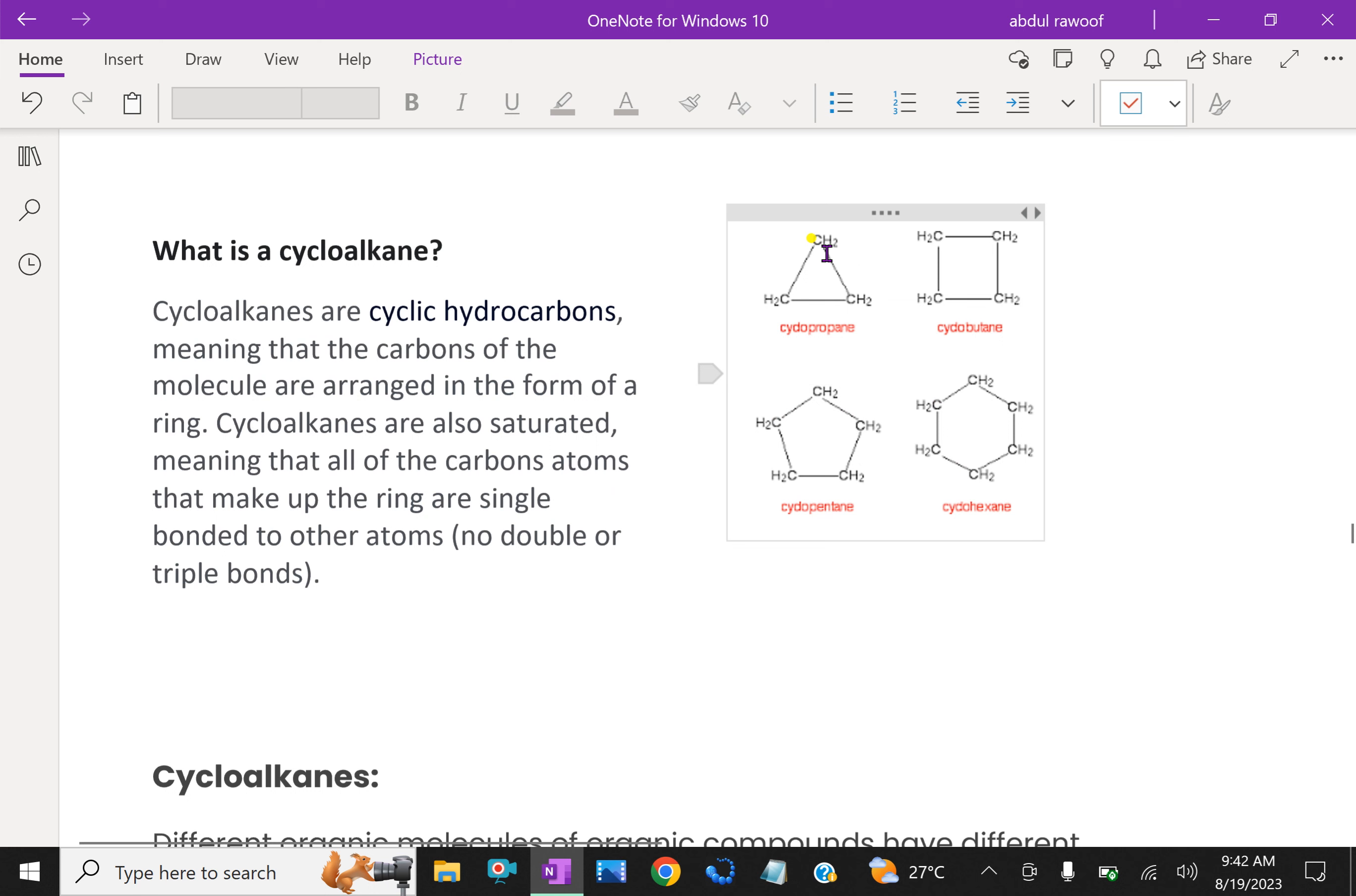Here, all are single bond and carbon. Here, this is cyclopropane in triangular form, cyclobutane square, cyclopentane pentagon, cyclohexane with hexagonal.